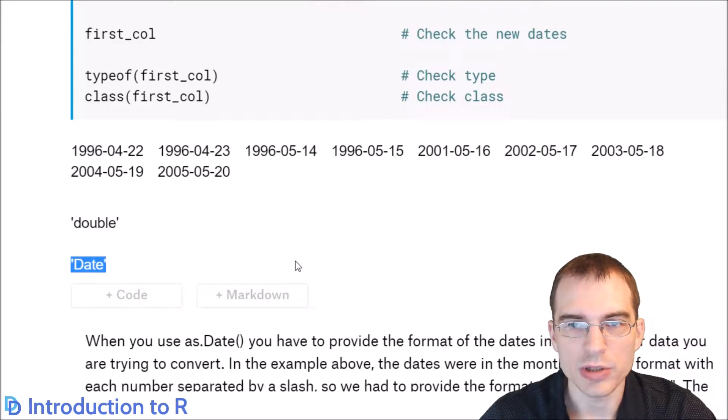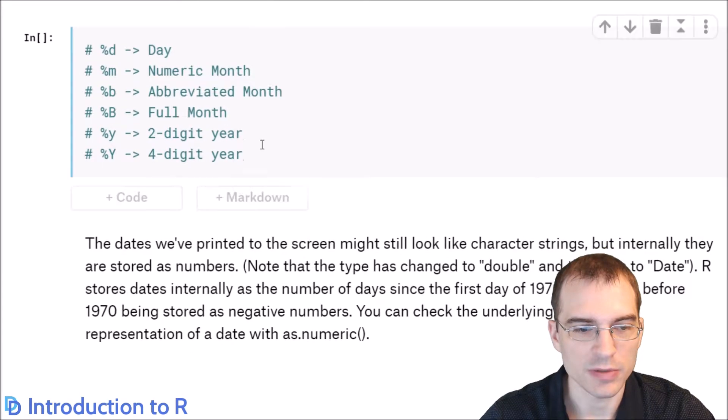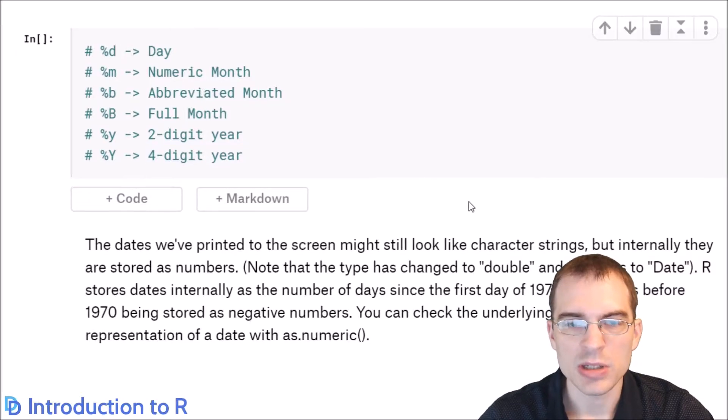To go more into the special format strings for dates, I'll show a couple different formatting characters you can use. Percent lowercase d is for the day. Percent m is for the numeric month. Percent b is for an abbreviated non-numeric month. Percent capital B is for the full month name. Percent lowercase y is for matching two-digit years. And percent uppercase Y is for matching dates that have a full four-digit year.